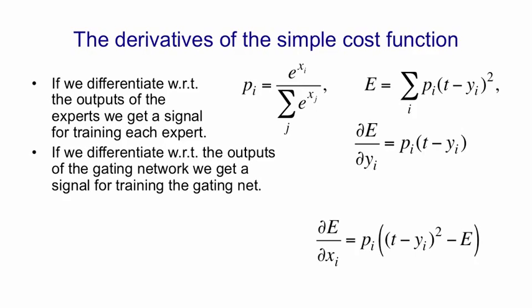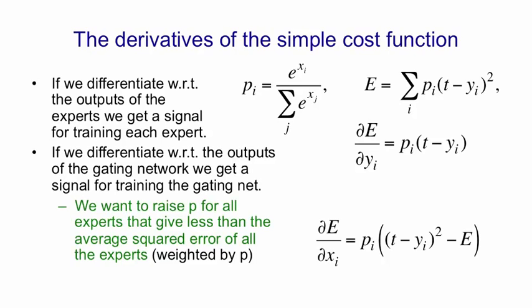We can also differentiate with respect to the outputs of the gating network. And actually what we're going to do is differentiate with respect to the quantity that goes into the softmax. That's called the logit. That's xi. And if we take the derivative with respect to xi, we get the probability that that expert was picked times the difference between the square error made by that expert and the average over all experts when you use the weighting provided by the manager of the squared error. So what that means is if expert i makes a lower squared error than the average of the other experts, then we'll try to raise the probability of expert i. But if expert i makes a higher squared error than the other experts, we'll try and lower his probability. That's what causes the specialization.